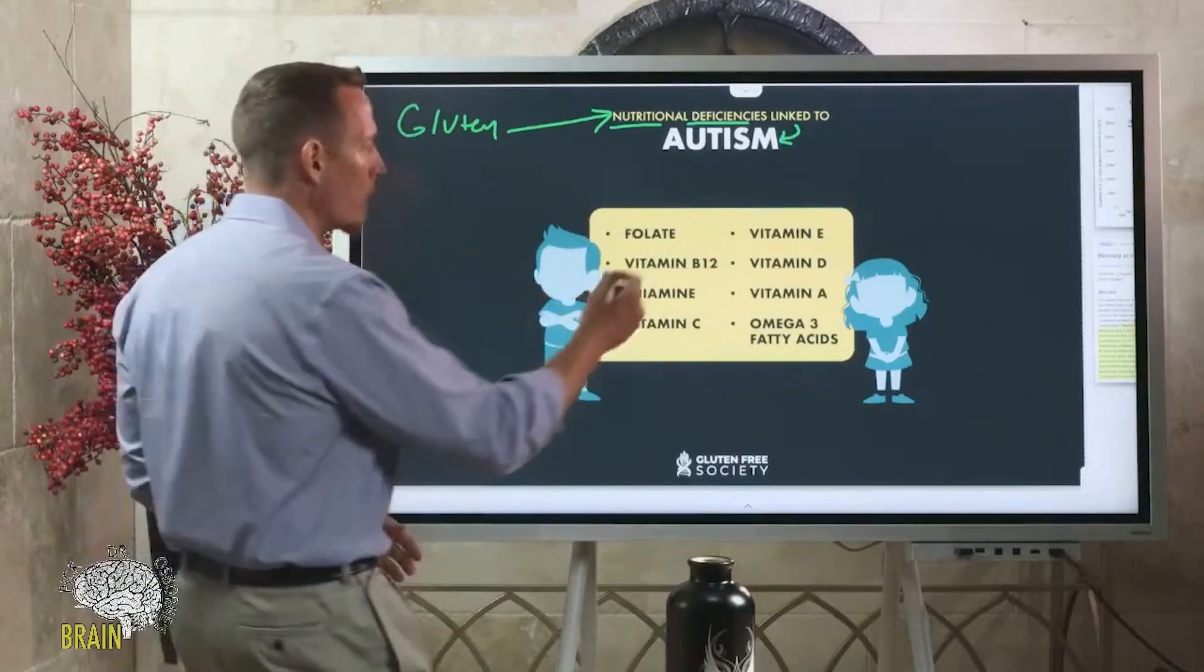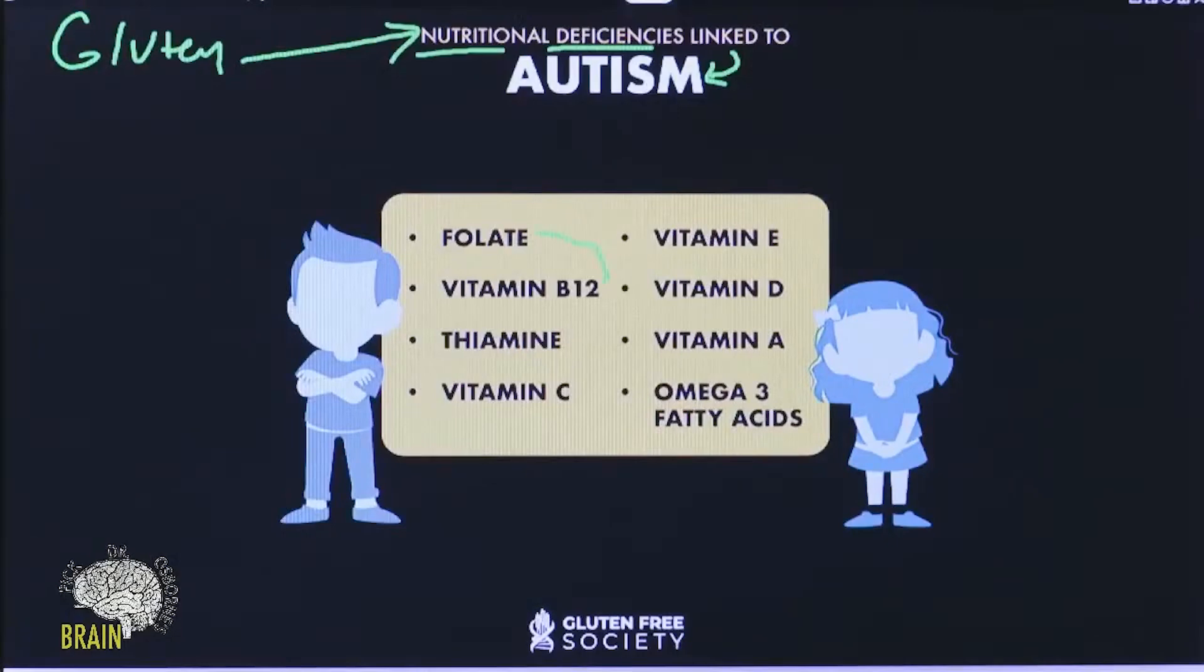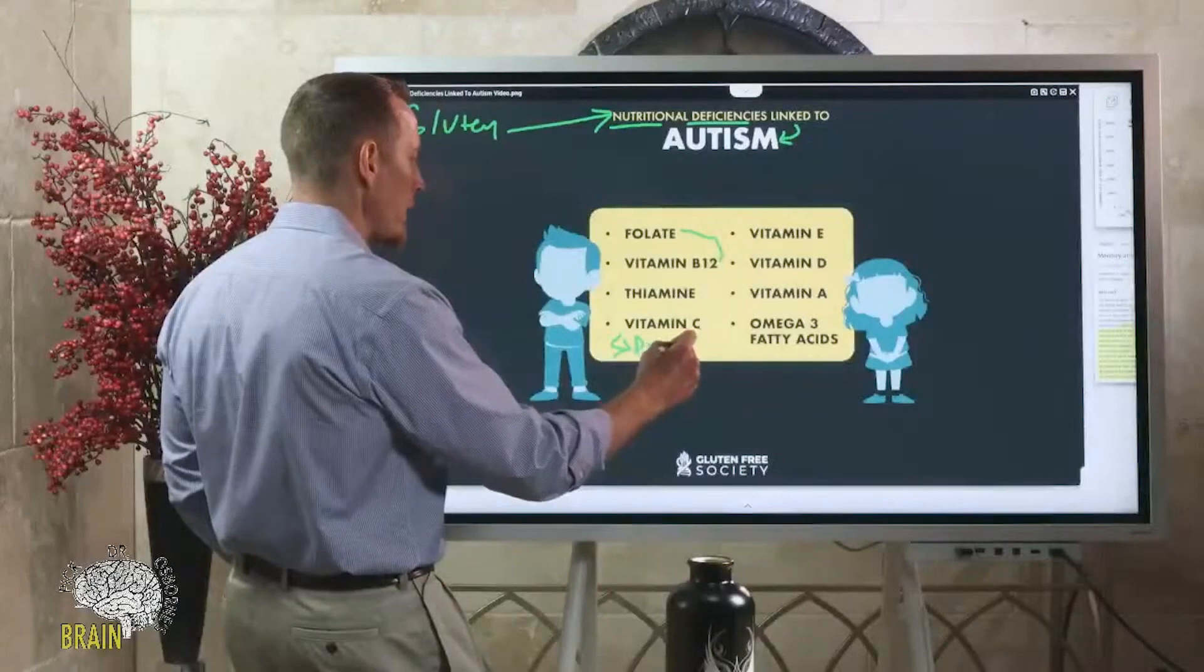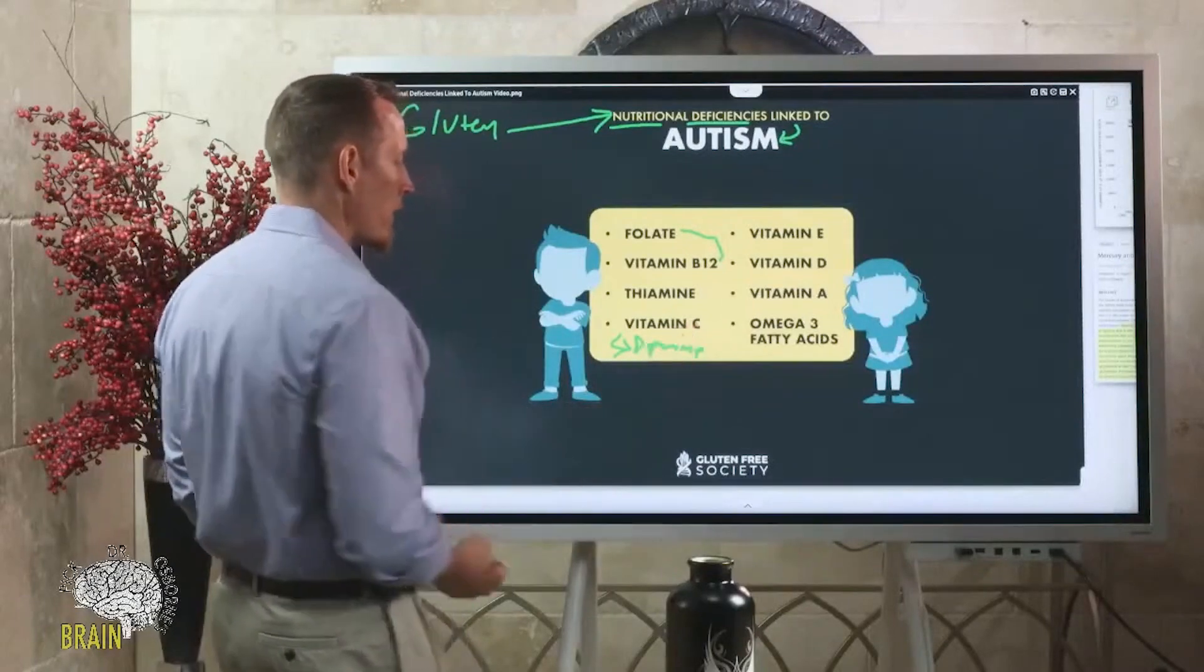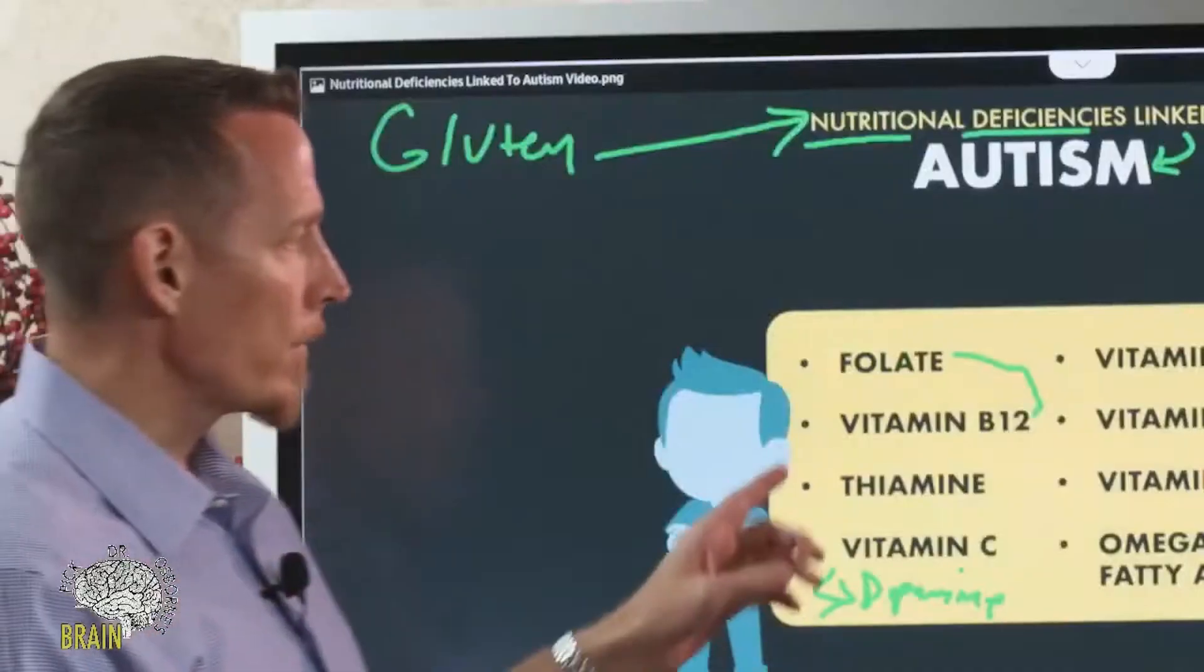Folate and B12, very common, these two necessary to form white matter in the brain, which is very important for brain development. Thiamine, very critical for brain development as well. Vitamin C is essential for the production of neurotransmitters like dopamine, and very important for the development of the brain.